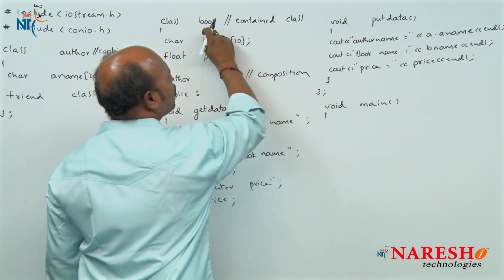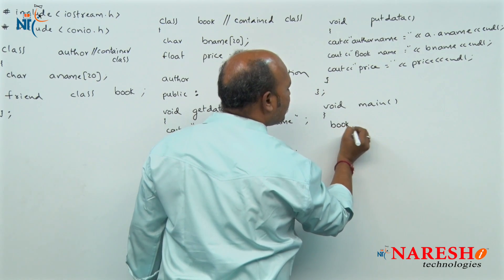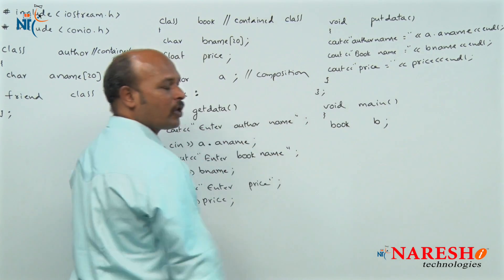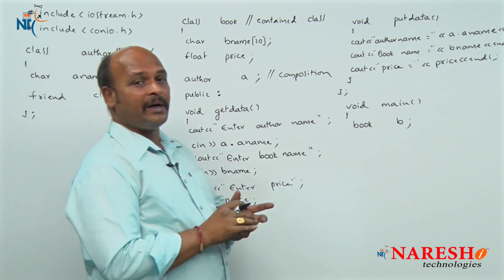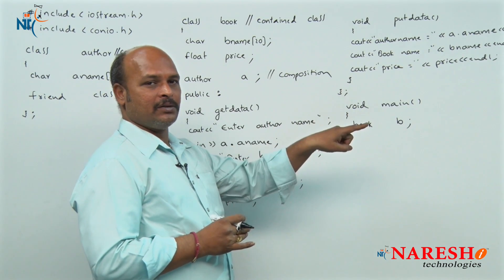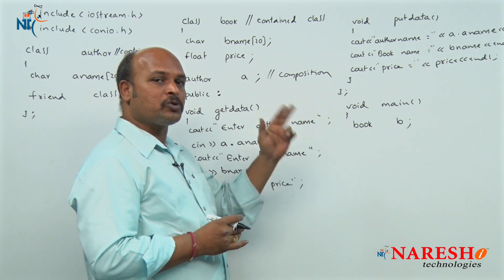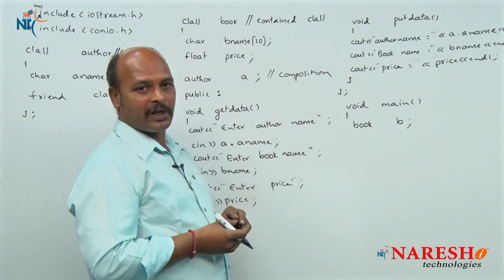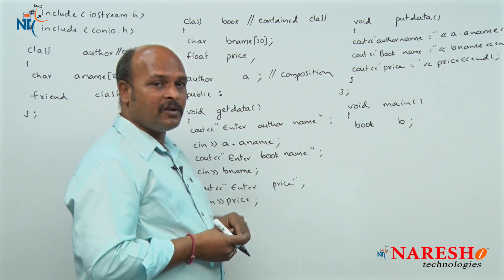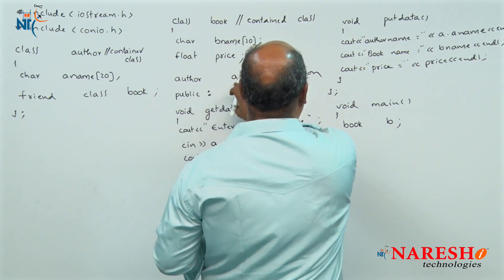That is why in main function we directly declare the contained class object. The contained class name is 'book', so directly declare: book b. In the previous example, test1 t1 and test2 t2 — two objects were created. But here there is no need for a first class object because it is already declared inside book.